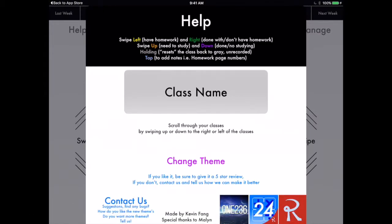It tells you swiping left means you have homework. Swiping right on the class means you're done with that homework or you don't have any homework. If you swipe up on the class name, it means you need to study. When you swipe down on it, that means you're all done studying. You don't have to do that anymore.